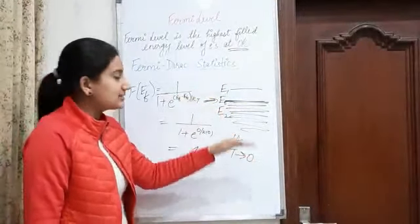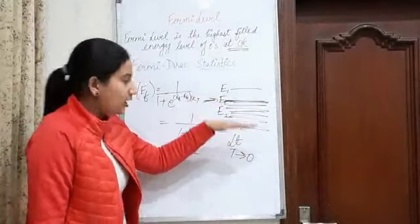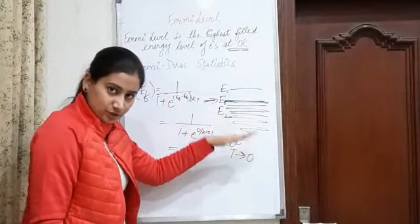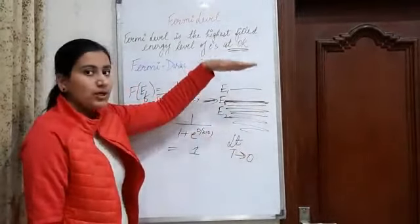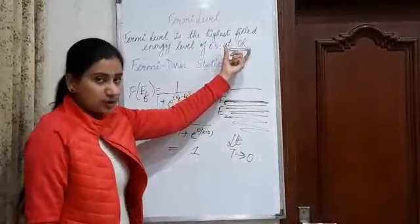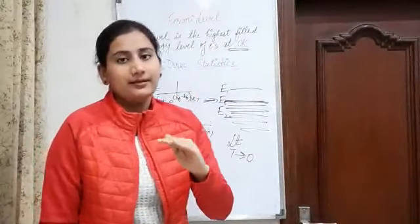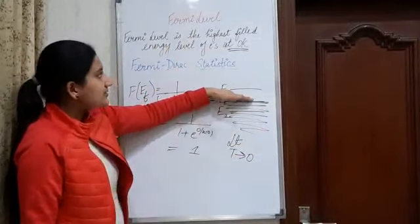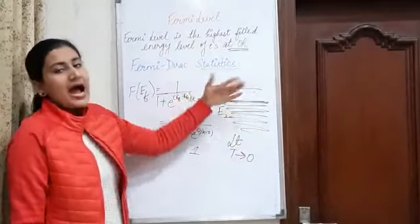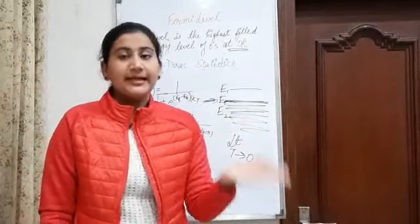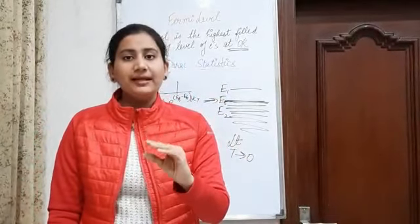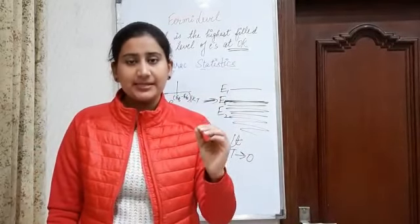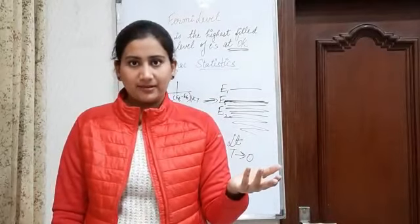So Fermi level is simply an energy level below which all electrons are present and above which no electron is present. It has to be calculated at 0 Kelvin because at room temperature there is thermal agitation. So Fermi level is the highest filled energy level at 0 Kelvin. In the next video I am going to tell you how the Fermi level is positioned in the middle in intrinsic semiconductors and what happens to the level in extrinsic semiconductors.